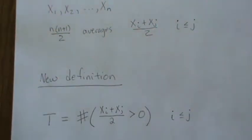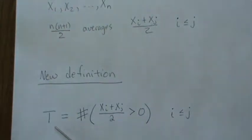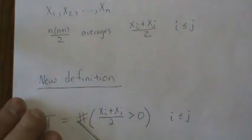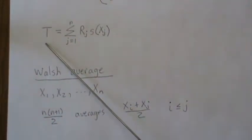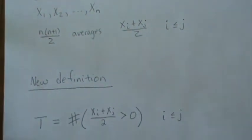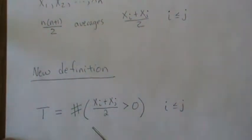The new definition of the signed rank test is going to be this: T, which we defined here and on the back page, is the sum of the positive values, the ranks of the positive values.